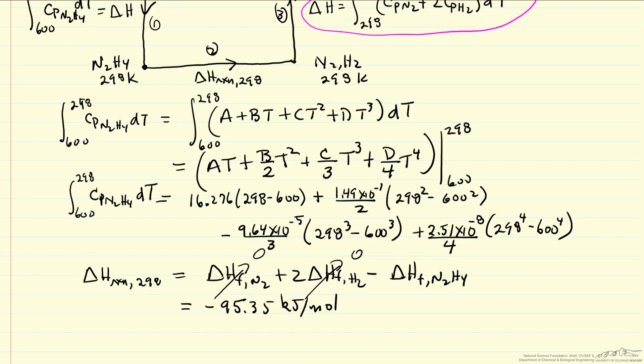I should point out that the heat capacities are in joules per mole per Kelvin. So these two delta H's that I'm calculating from heat capacity are going to be joules per mole, so I'm going to have to divide that by 1,000. So delta H for reaction at 600 is delta H1 divided by 1,000 to convert to kilojoules, plus delta H2, plus delta H3 divided by 1,000.